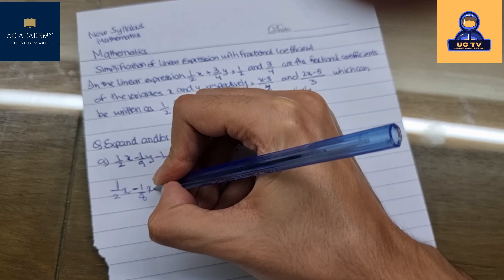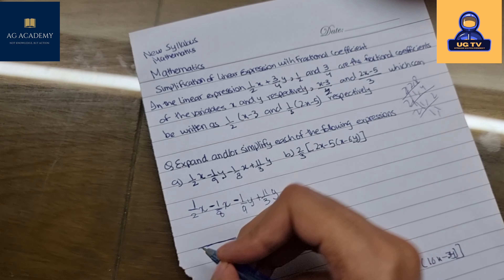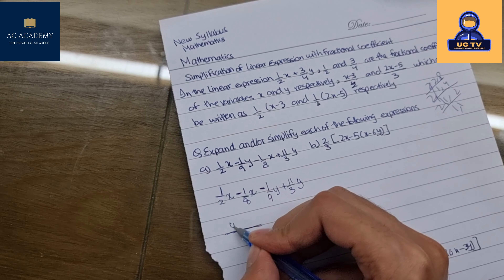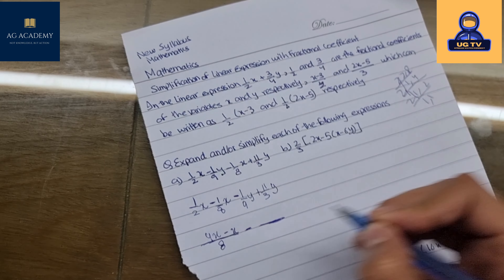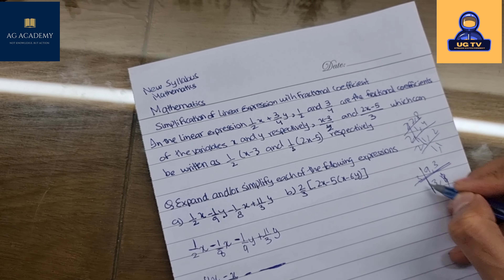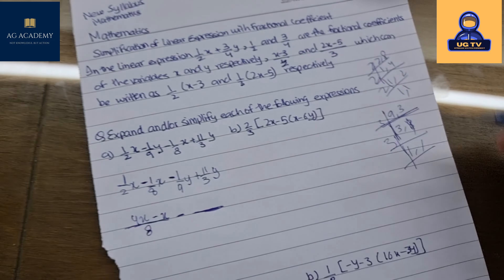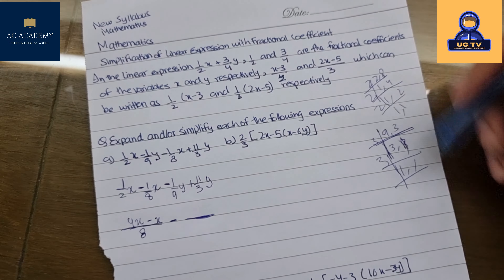We'll take the LCM of 2 and 8. Two, one, four — two, one — two times two equals four, and four times two equals eight, so eight would be the LCM. Eight divided by two equals four, and four times one equals 4x. Then we take the LCM of 9 and 3 — three times three equals nine — so nine is the common factor. Nine divided by nine equals one, so that's y. Nine divided by three equals three, and three times eleven equals thirty-three.